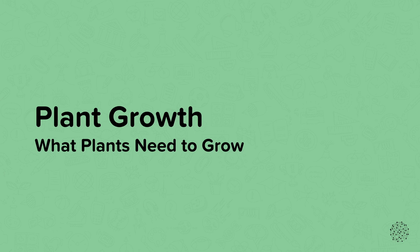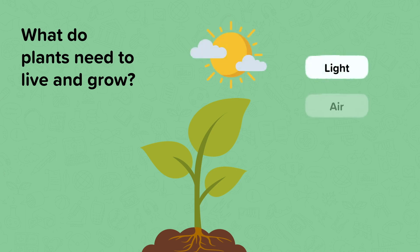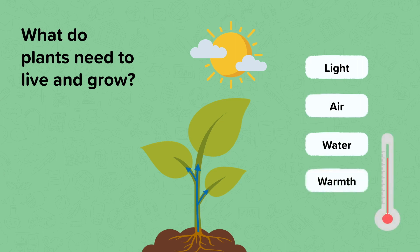What do plants need to grow? Here is a small plant. Do you know the main things this plant needs so it can grow and live? Plants require light and air. They also need water and warmth to grow and live. Without these four things plants will die. Plants also need room or space to grow.